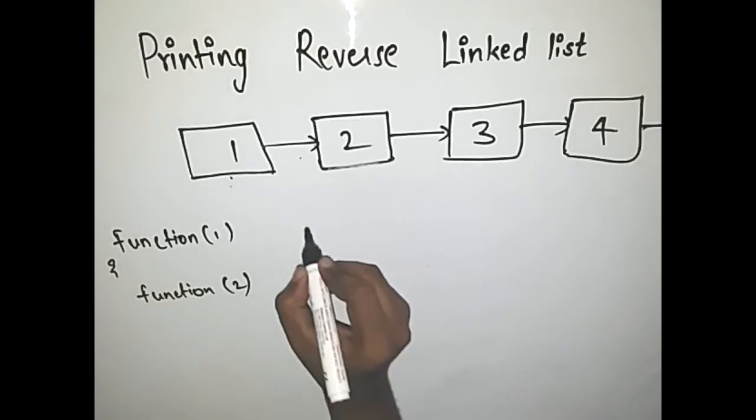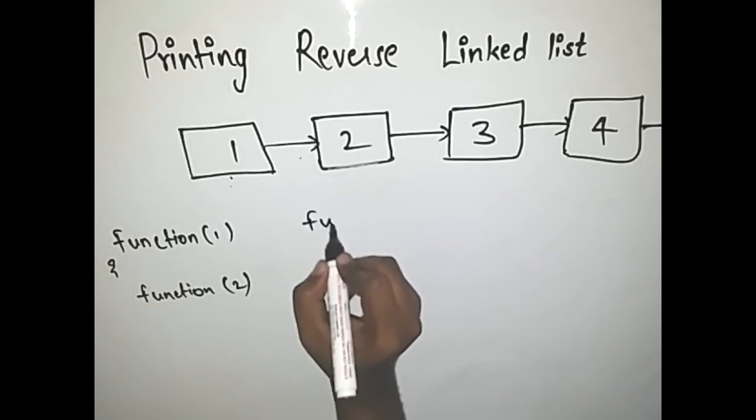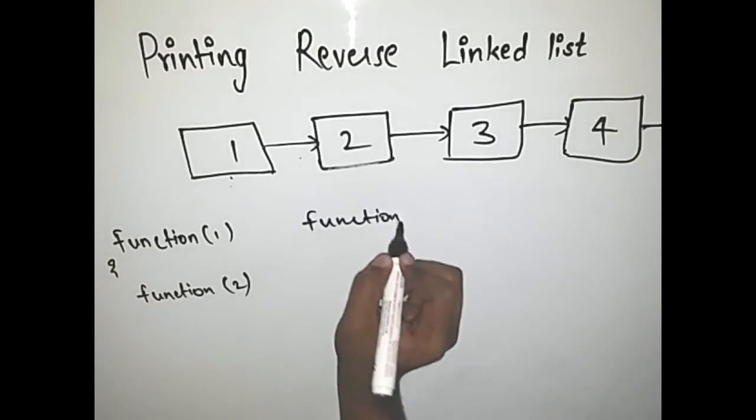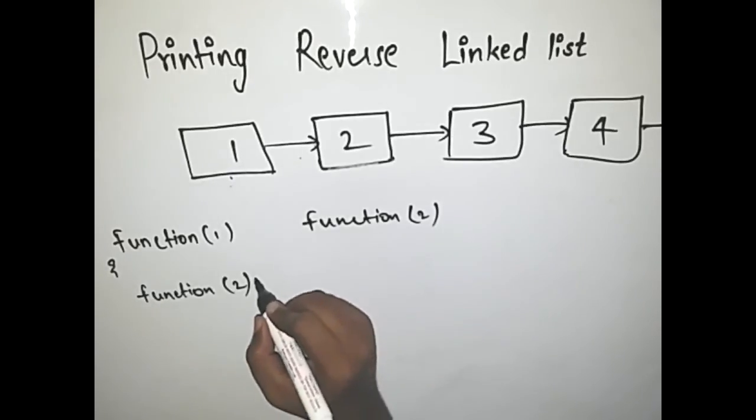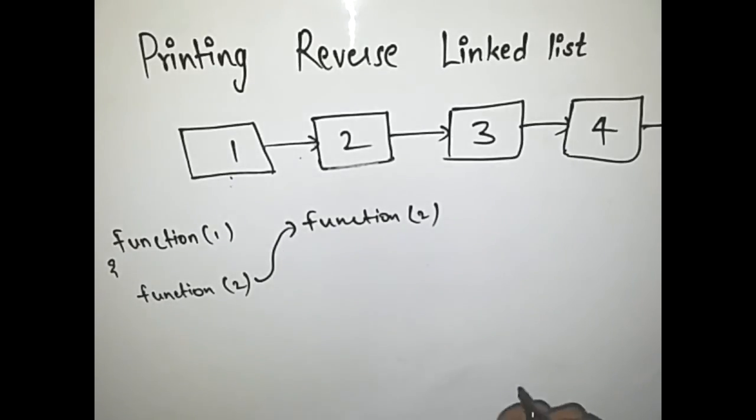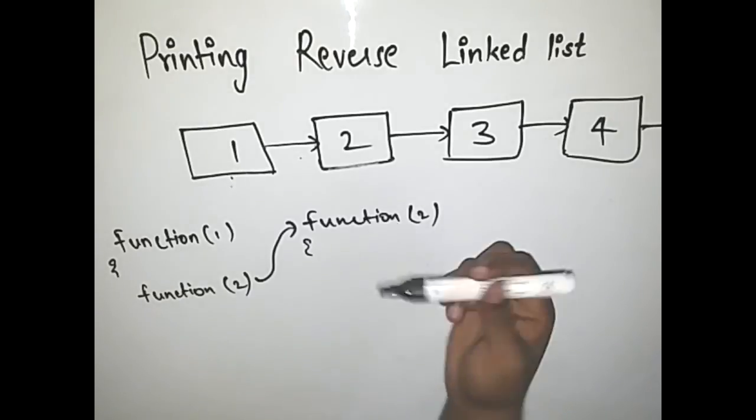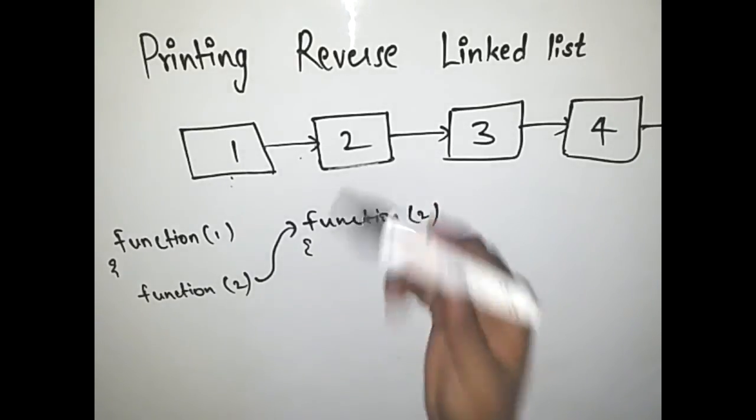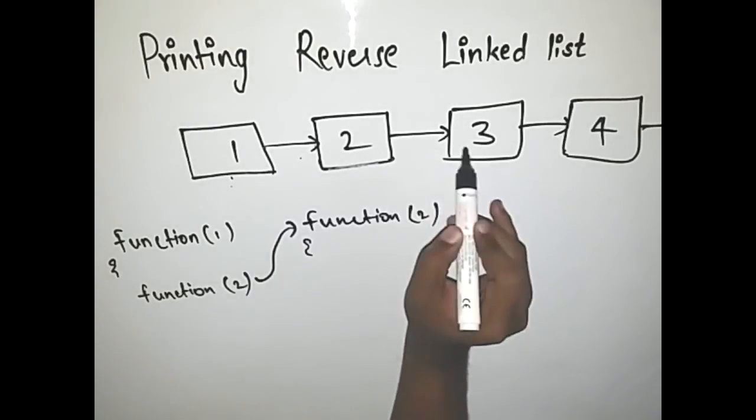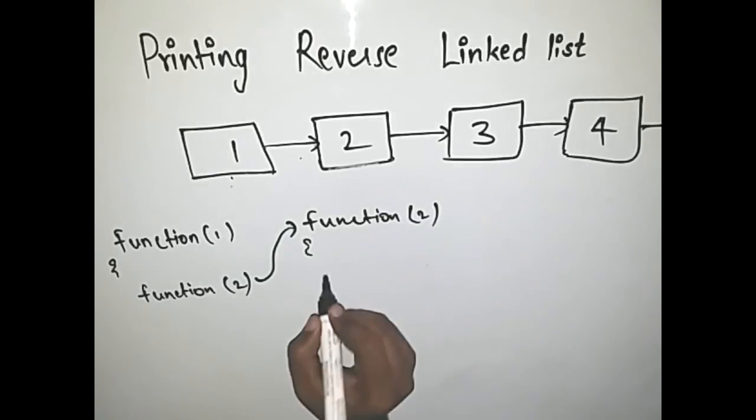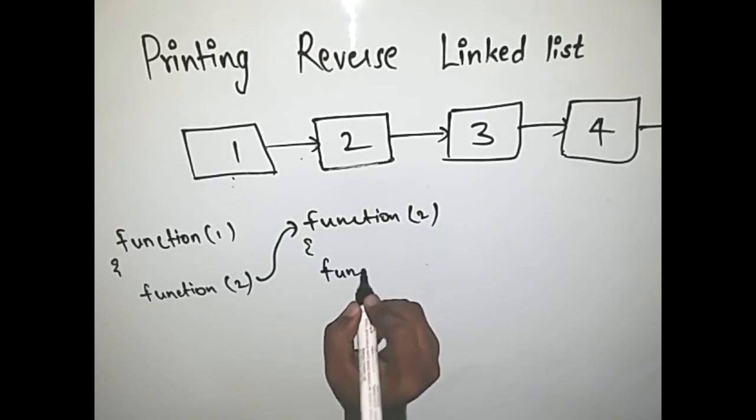So function of 2 is called here and we go into the function of 2. What happens in function of 2 is we check if the next of the second node is null or not, which is not null but it points to the third node. So we call the third node.